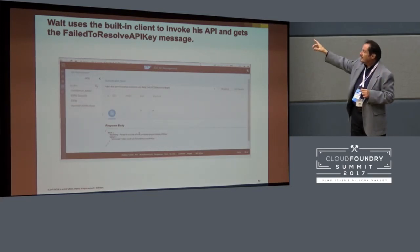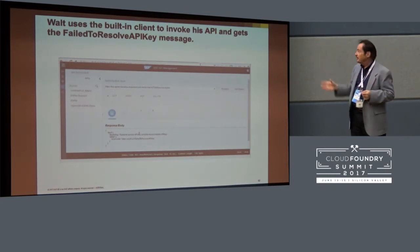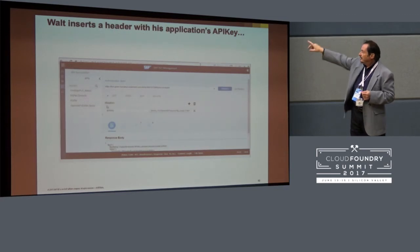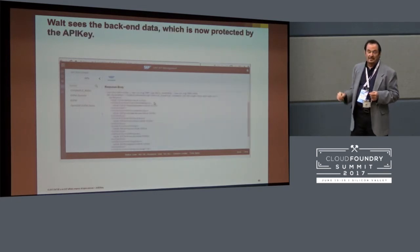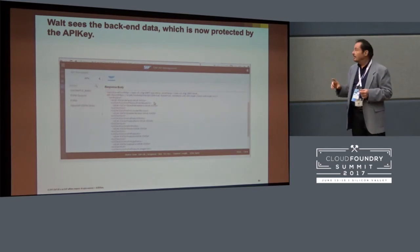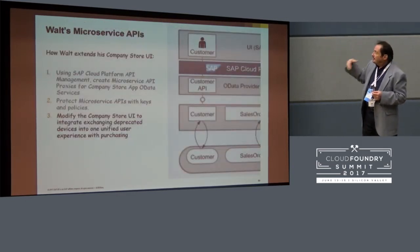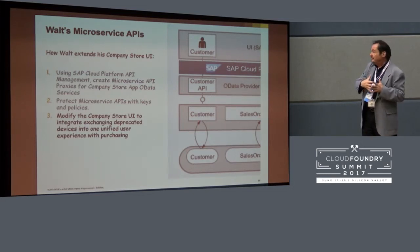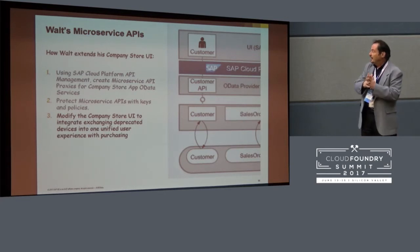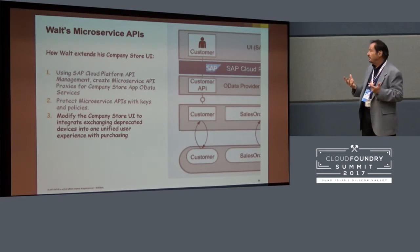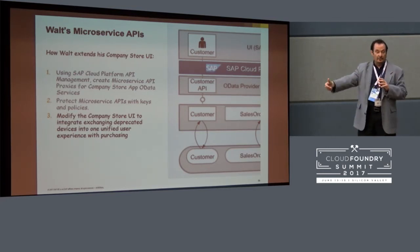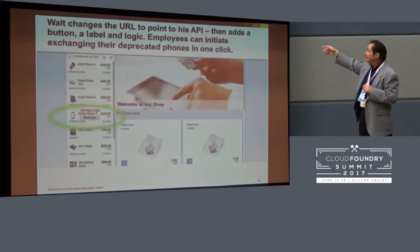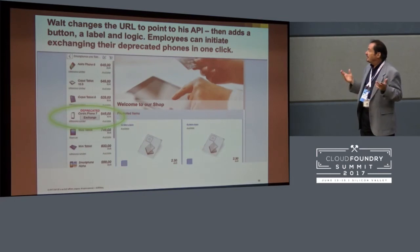In SAP Cloud Platform you have a client that you can use for testing these things, or you could use Postman — same thing. Sure enough, if he adds the API key to his request, he can actually get at the back-end data, and this time it's been done securely with an API key. He's gotten at the back-end data, managed to add a policy that makes it safe to expose, and now he can use hooks from the company store UI so that he can exchange deprecated devices. He basically just has to make changes to the UI — the back-end remains exactly the same as it ever was.